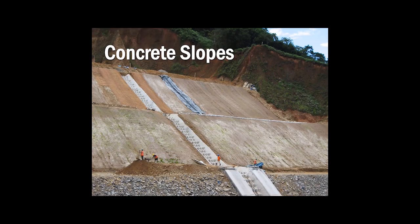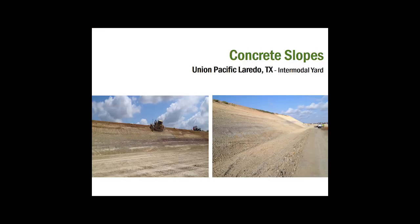Our last main application type is concrete slopes. Concrete filled GeoWeb or hard armor slopes are best used when you know there's going to be high water flow across the system. Here's a channel project that takes water runoff from a rail intermodal yard. The GeoWeb system replaced a design that had six inches of reinforced concrete channels and grout bags for the two-to-one slope protection. The GeoWeb system was a value-engineered solution due to cost overruns and saved the owner a couple million dollars, but more importantly sped up construction and allowed the yard to be in service much quicker than originally anticipated.